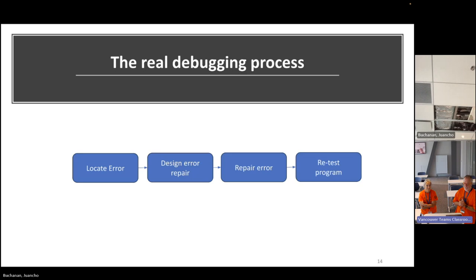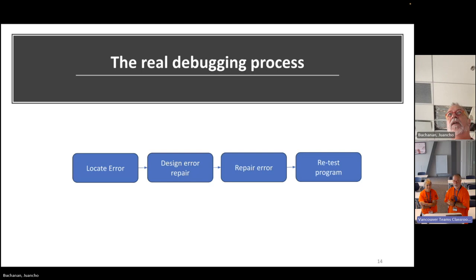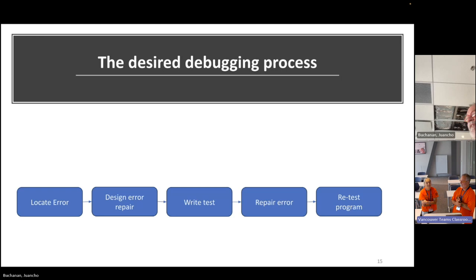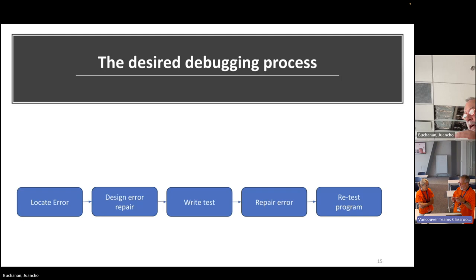The real debugging process: locate the error, design a repair, repair it, retest the program. This is how the whole world kind of operates — 'I got it done, thank goodness.' But this is what should actually happen. Whenever you find a mistake in some code, clearly your test didn't catch it the first time, so you write a test such that if that error ever gets introduced again, you can test against it. That's regression testing.